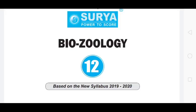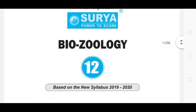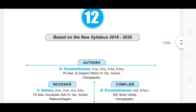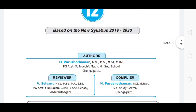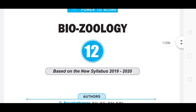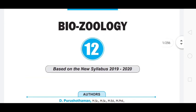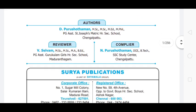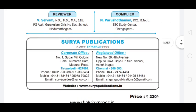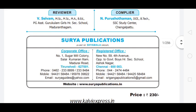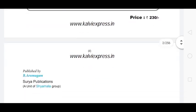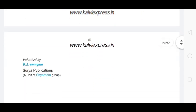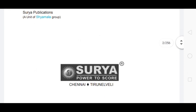My friends, what are you talking about? This is the Standard Zoology Guide, Suriya Guide. This is Botany — Bio-Botany and Biozoology. This is Suriya Publication, this is a full guide. What are you talking about?